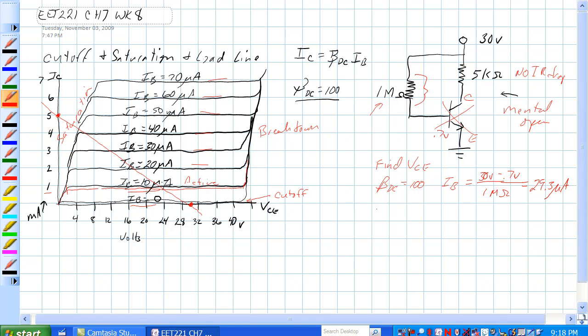If, let's see, IC is equal to beta DC times IB, so it's equal to 100 times 29.3 microamps. And that's equal to 2.93 milliamps. So IC is equal to 2.93 milliamps.